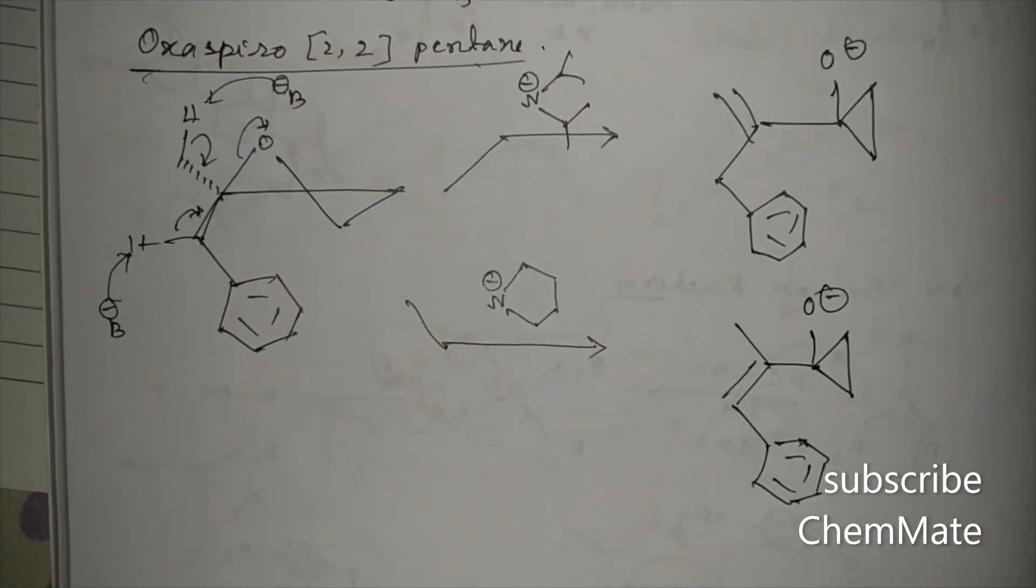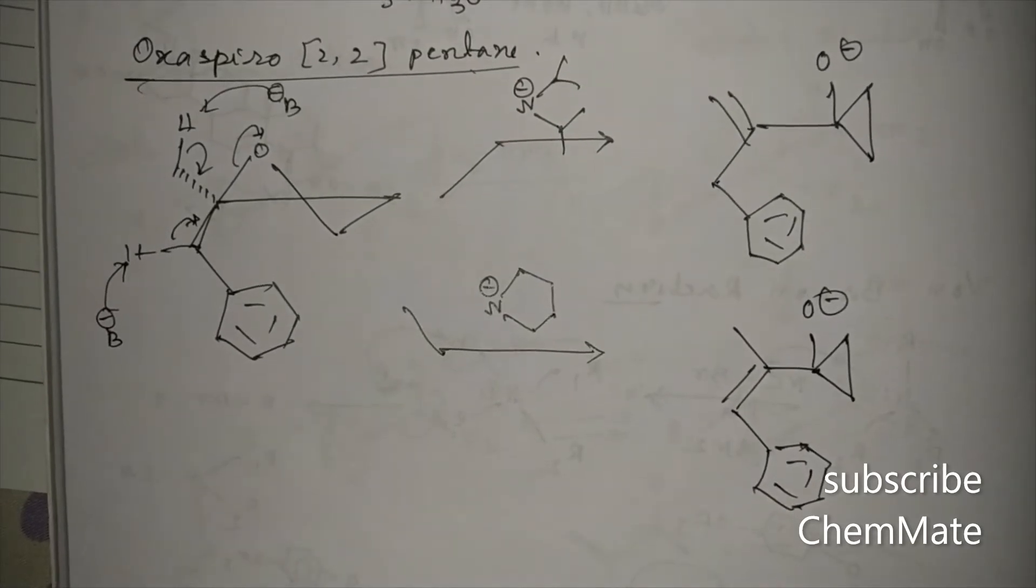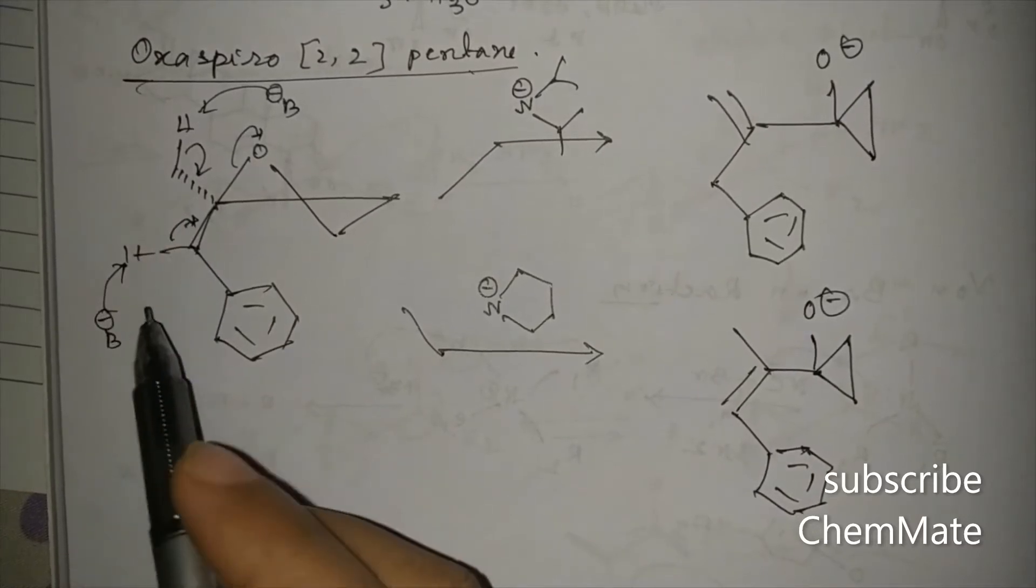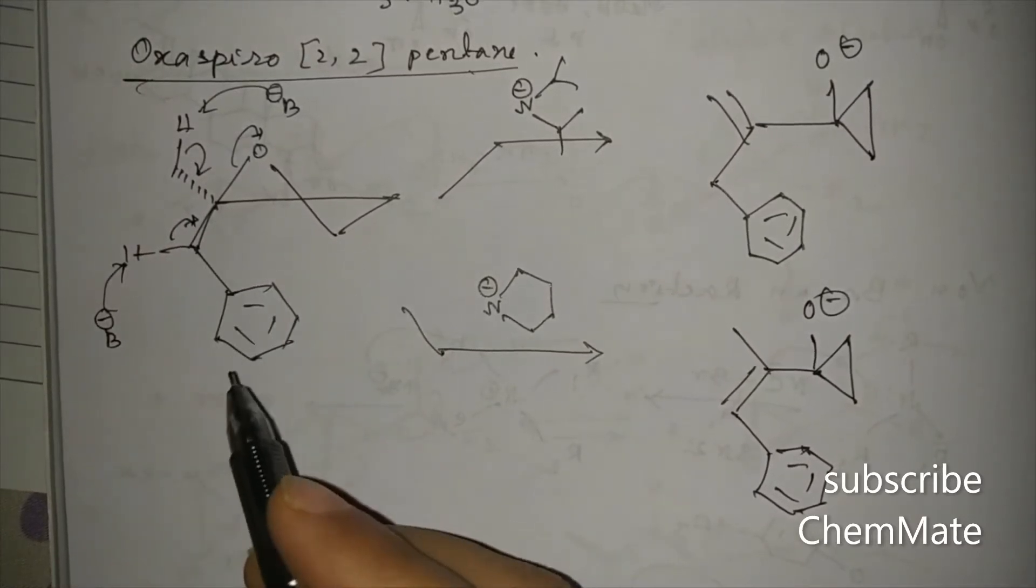like this. So now, as you can see here, this is the regioselective ring opening of spiro [2,2] cyclopentene with a base.